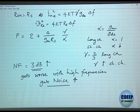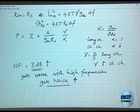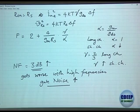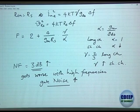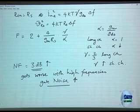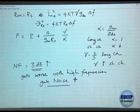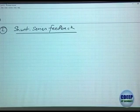So now you understand the fundamental of how to compute noise figure — we used a simple circuit and now we build more complex circuits. The second topology is called shunt-series feedback. Do you remember feedback? What does shunt mean? Shunt is what you are sensing — sensing the output — and then adding that feedback with the input voltage in series.